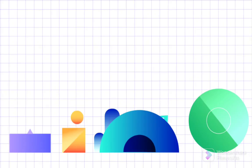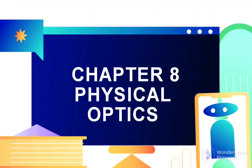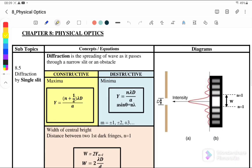Hello, welcome back to my channel. Today we will learn Chapter 8, Physical Optics. For this video, we are going to discuss subtopic 8.5: Diffraction by Single Slit. Before we start to discuss the examples, let's look at the summary first for diffraction.